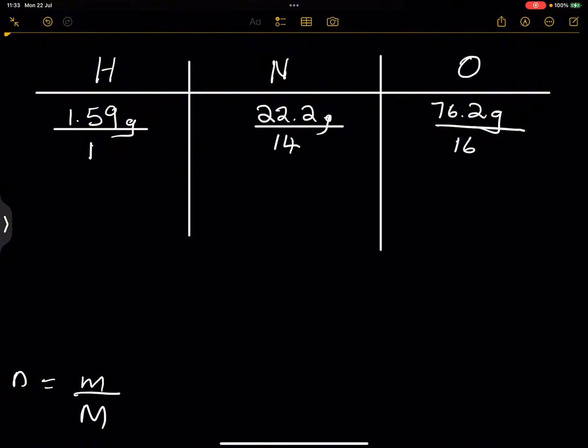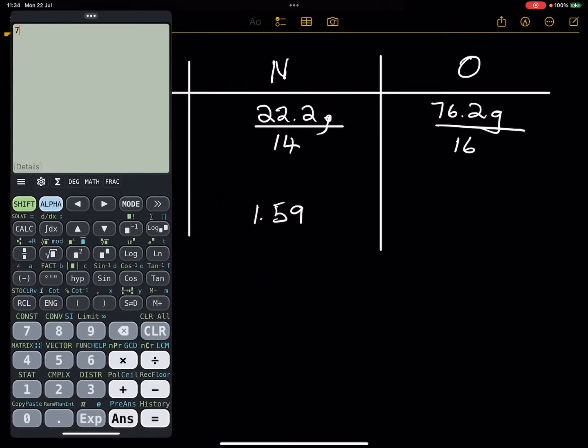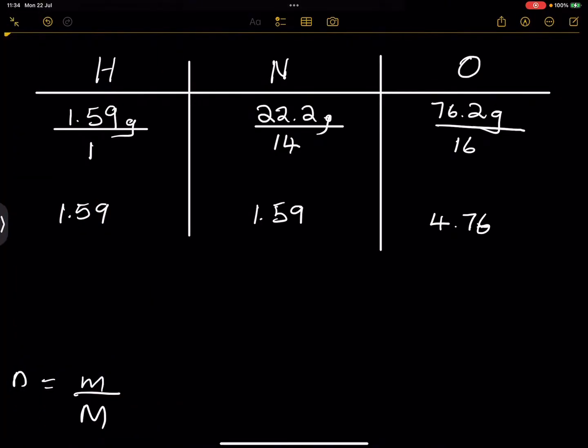So what we're going to do is find out the number of moles of each of the atoms. 1.59 divided by 1, that should give us 1.59, that should be easy enough. And then we've got 22.2 and we divide that by 14, and I get 1.59 again. And the last one is 76.2 and we divide that by 16, so that gives us 4.76. That's the number of moles of oxygen if we were given this as the mass of each.